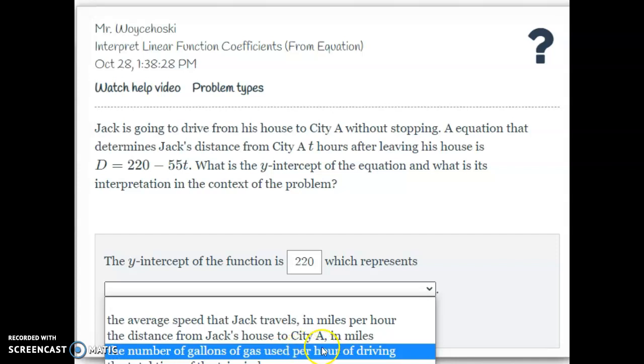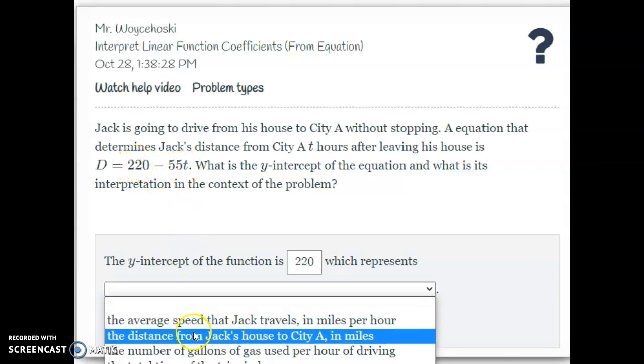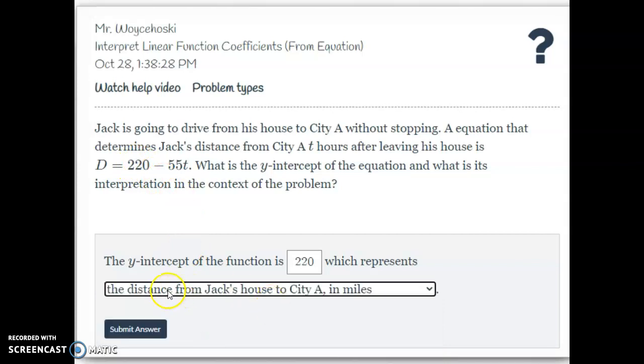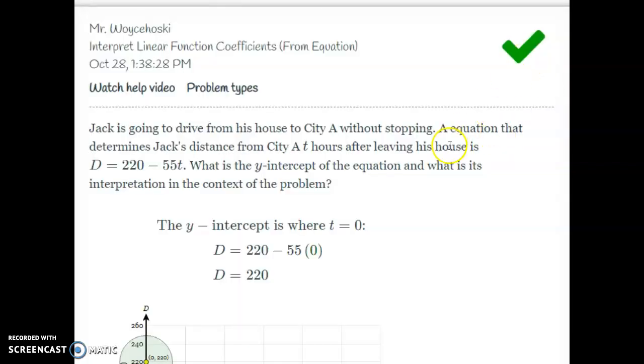Now one of the things you want to think about is the y-intercept is kind of like the starting amount. And so in this one it says Jack is going to drive from his house to city A without stopping. So that means we're starting 220 miles away and we're getting closer at 55 miles every hour. So that 220 is going to be that distance from Jack's house to A, so our starting distance. So I'm going to click that, I'm going to submit my answer, and you'll notice I get the green check mark.